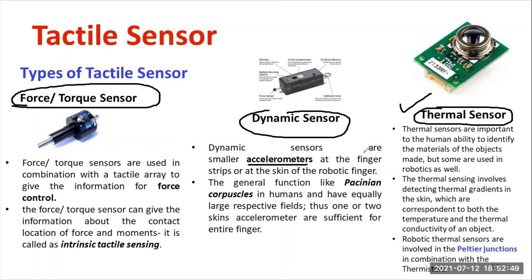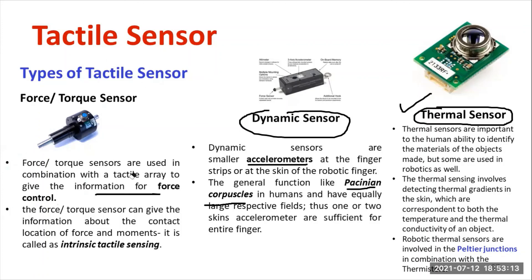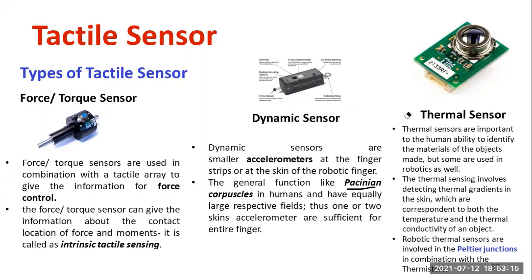The dynamic sensor also has a major role in biomedical applications, such as the Pacinian corpuscle use in human bodies — we can check those measurements. Regarding force or torque sensors, these sensors are used in combination with a tactile array to provide information for force control. These are the different varieties of tactile sensors available in the market.